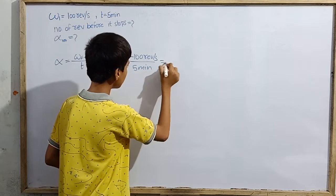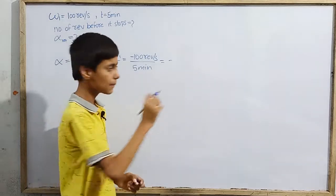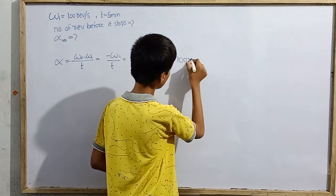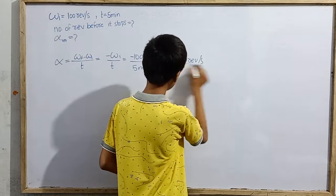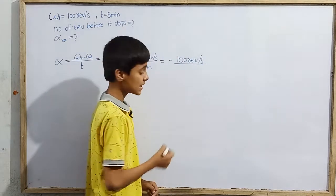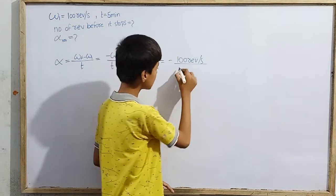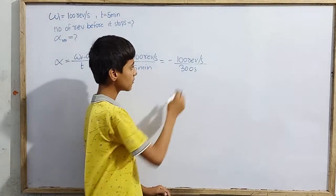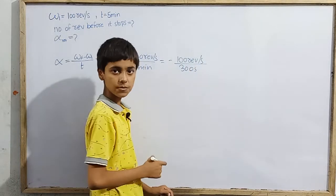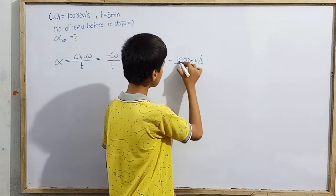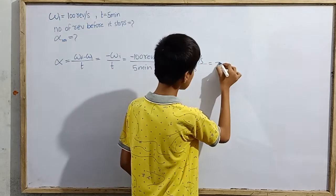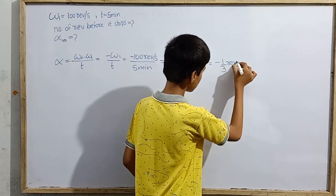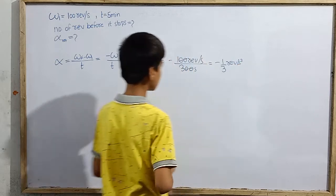We need to convert 5 minutes into SI units. 5 minutes is 5 × 60 = 300 seconds. So angular acceleration α = −100 revolutions per second divided by 300 seconds. Two zeros cancel, giving α = −1/3 revolution per second squared.